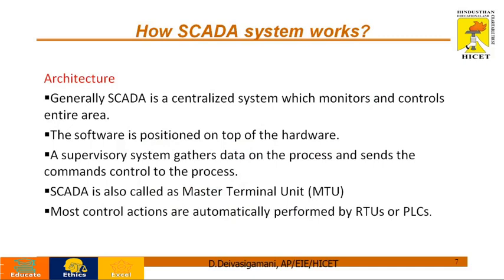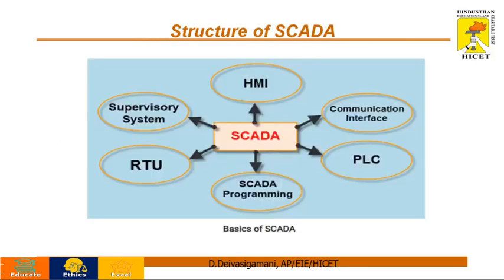How does a SCADA system work? Generally, SCADA is a centralized system which can monitor and control the entire plant area. SCADA is a combination of software and hardware where the software runs on top of the hardware. It is a completely supervised system which gathers information from the entire plant. SCADA is also called MTU — Master Terminal Unit — where all decisions are taken. SCADA is completely bi-directional, connected to field devices at all times. Most actions are taken automatically with the help of RTUs as well as PLCs.